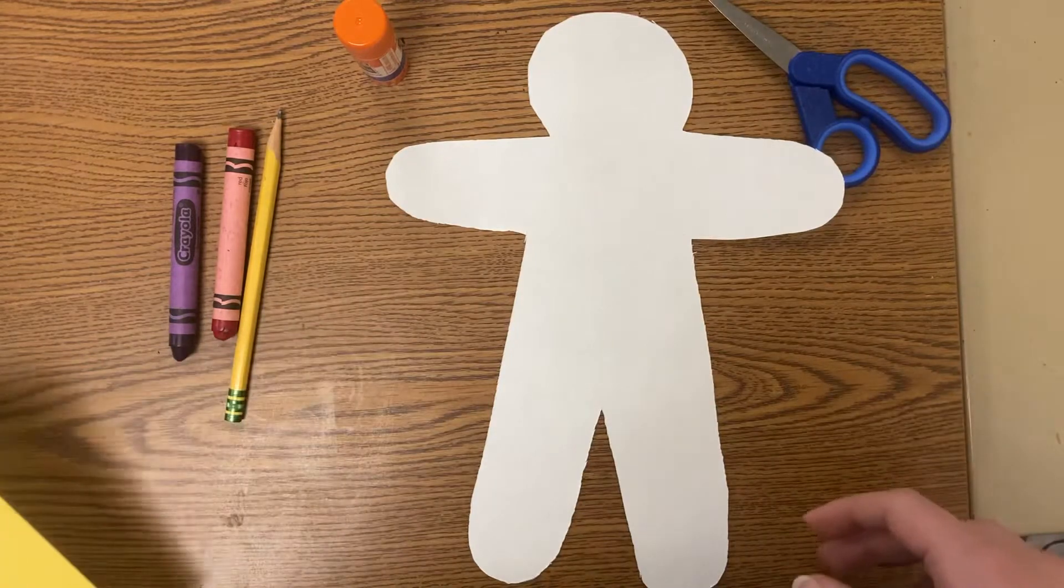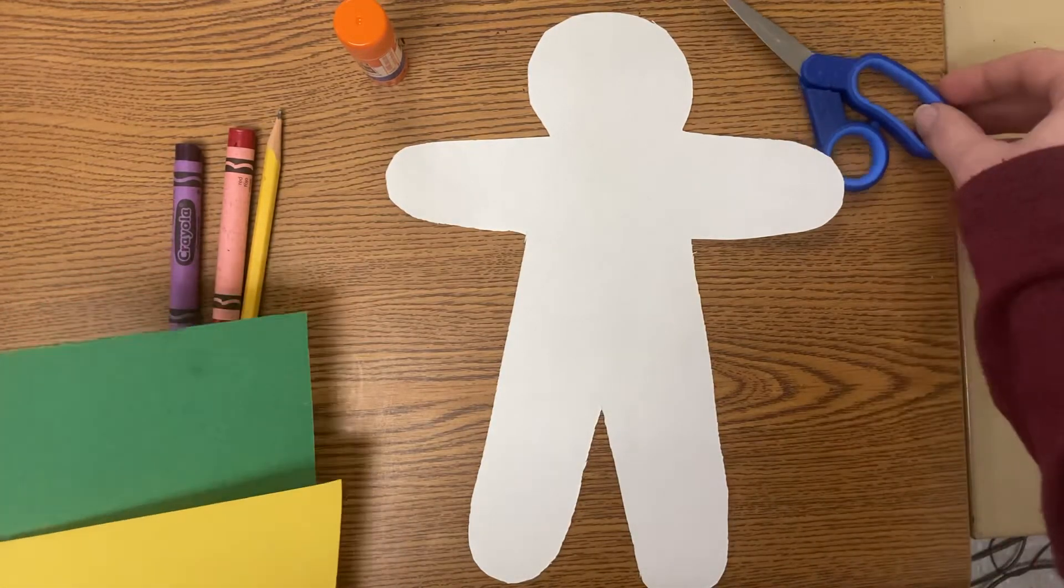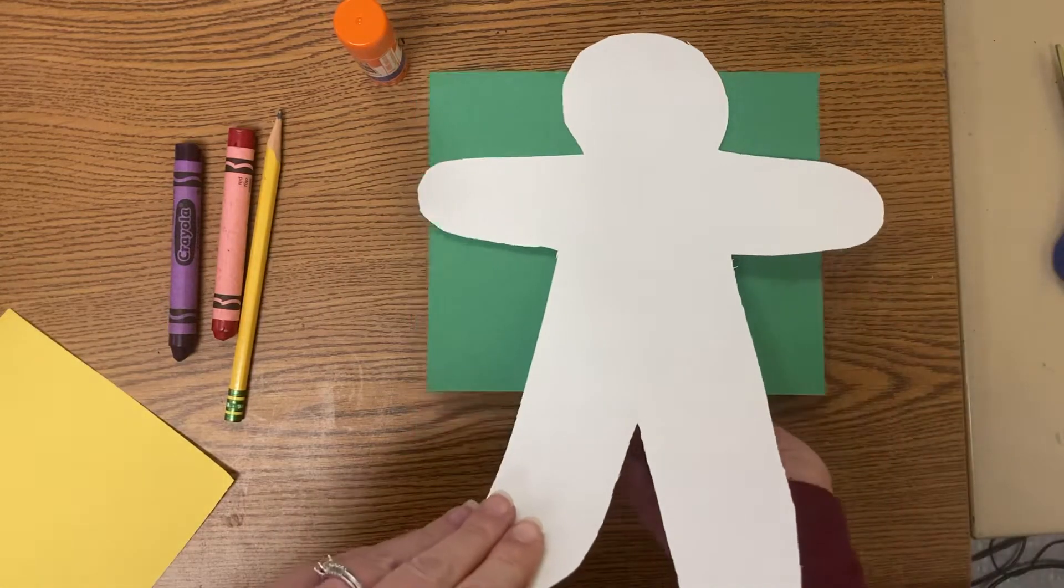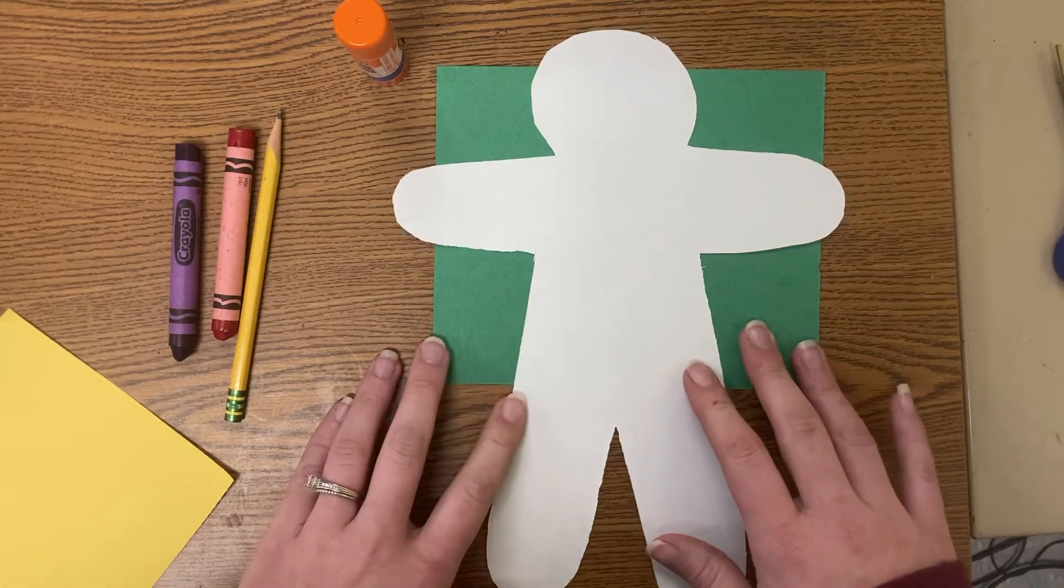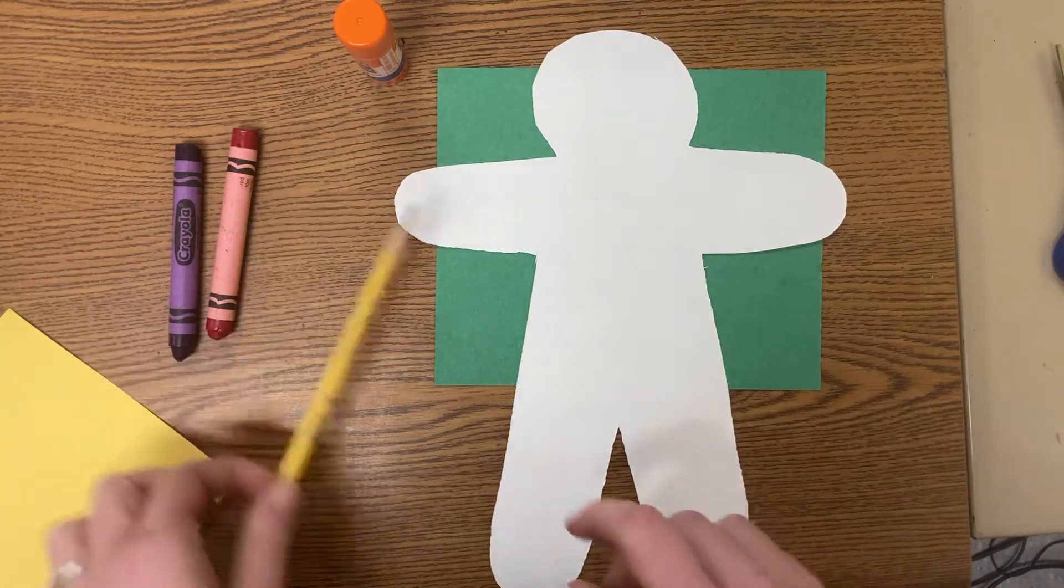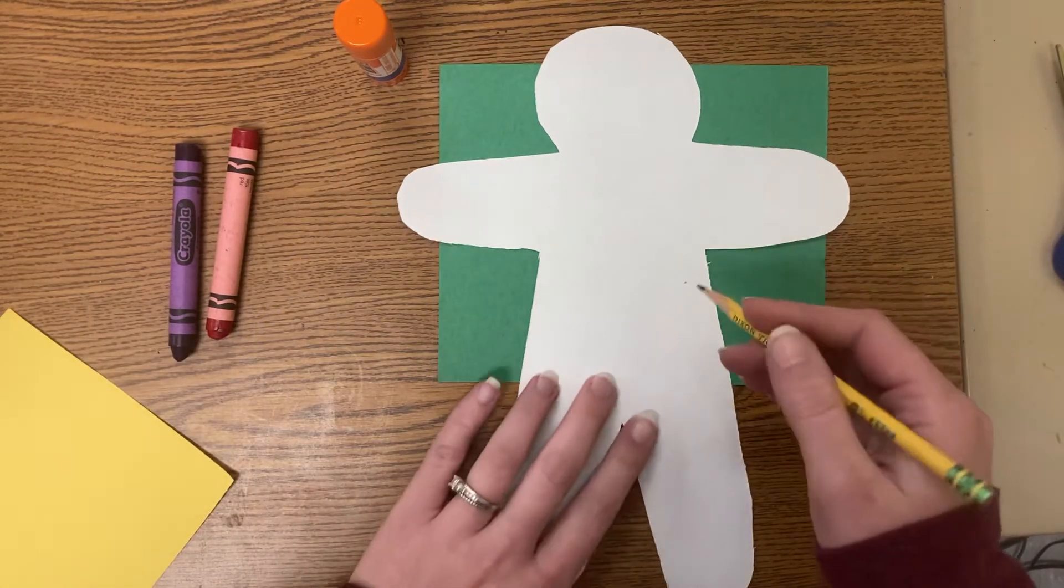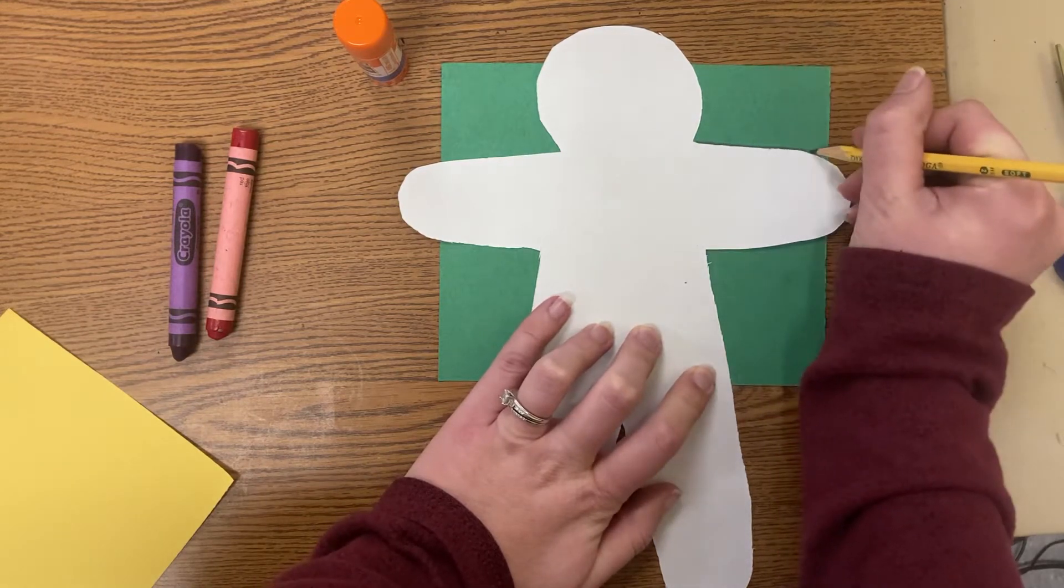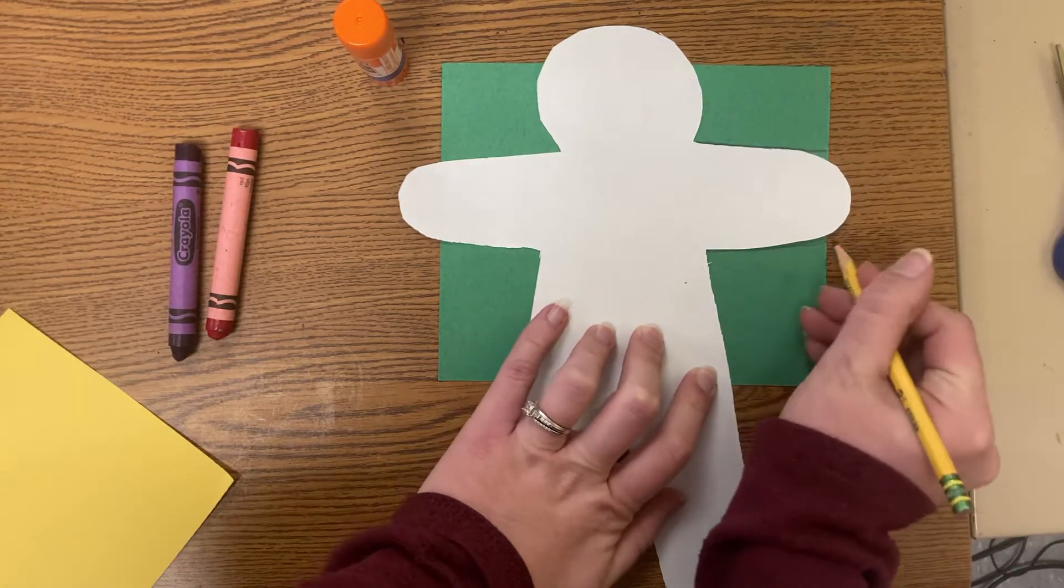So let's get started. What you need to do is take one of those colorful pieces of paper I gave you and put it underneath your person or your croquis and use a pencil. We're going to do the shirt first.